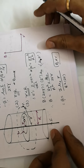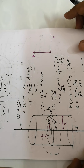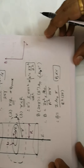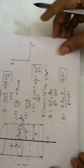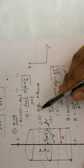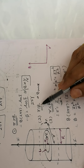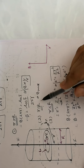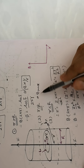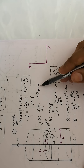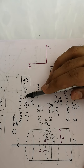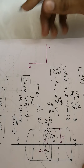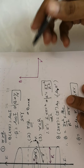To summarize: when current is uniformly distributed and we are inside the conductor, the magnetic field is directly proportional to r. At the surface where small r equals capital R, the magnetic field is at its maximum. As we move further away from the current-carrying conductor beyond the surface, the magnetic field gradually decreases inversely with distance.